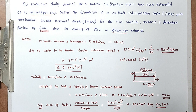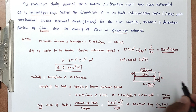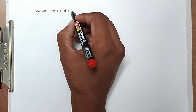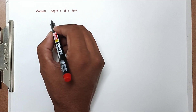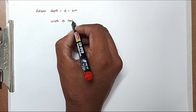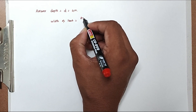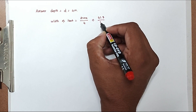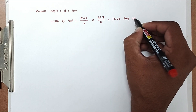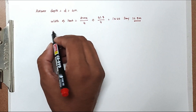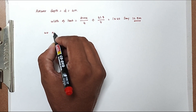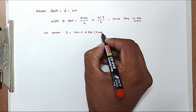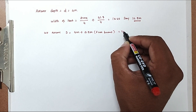From the area we can assume the depth and then find out the width of the tank. Assume effective depth equals 4 meters. Width of tank equals area divided by depth: 41.7 divided by 4, giving a value of 10.42, say 10.5 meters. Now the total depth equals 4 meters plus 0.5 meters freeboard, giving a total depth of 4.5 meters.